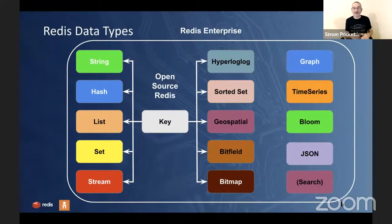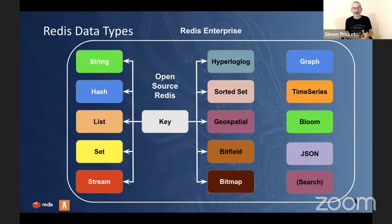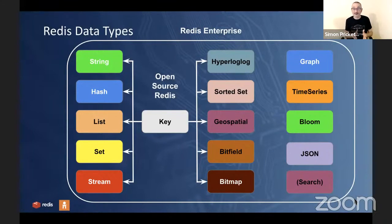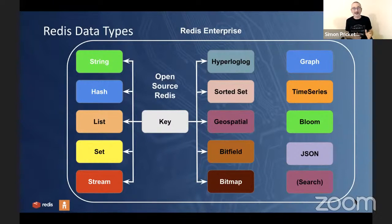In Redis Enterprise, a cloud product you can sign up for or install in your own infrastructure, we add additional capabilities. We have a graph database for Cypher queries, time series for IoT and big data applications with aggregation and downsampling, and probabilistic data structures, which are great for large data sets as an efficient way to approximate counts or check if something's present. Today we'll also look at the ability to do complicated searches over data in Redis and see how that works in AI use cases.